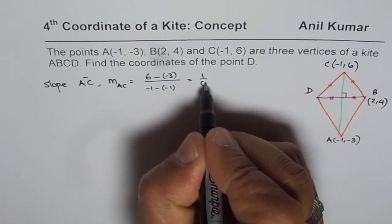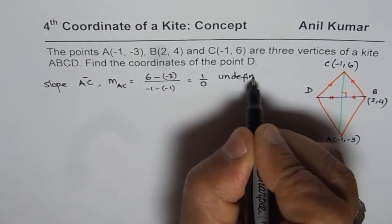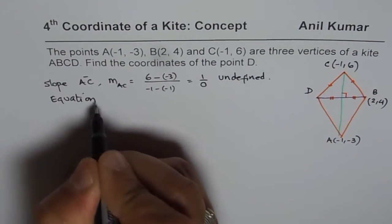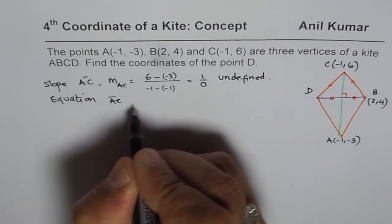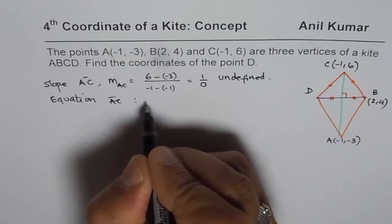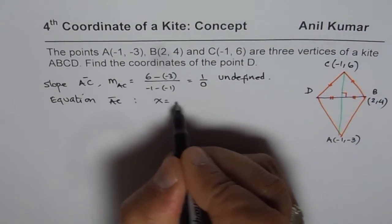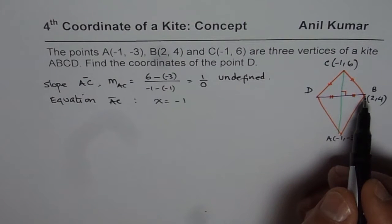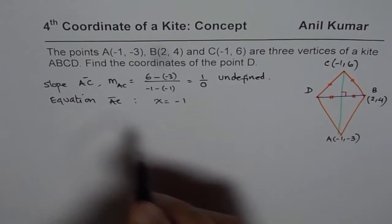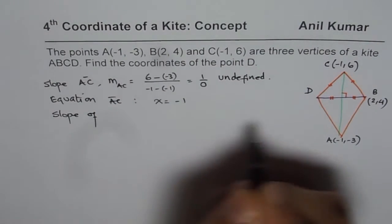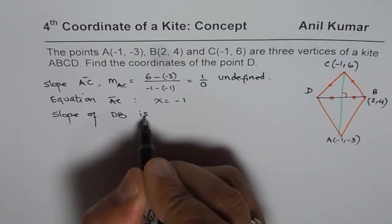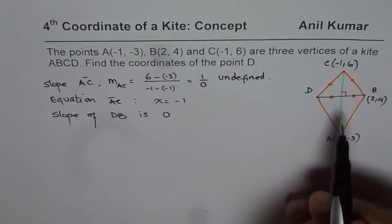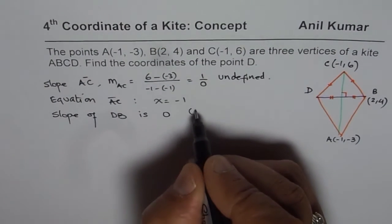The equation of this line AC, you can write as x = -1. Slope of DB is negative reciprocal of that of AC. So we can say slope of the other diagonal DB is 0. A line perpendicular to vertical line is a horizontal line.